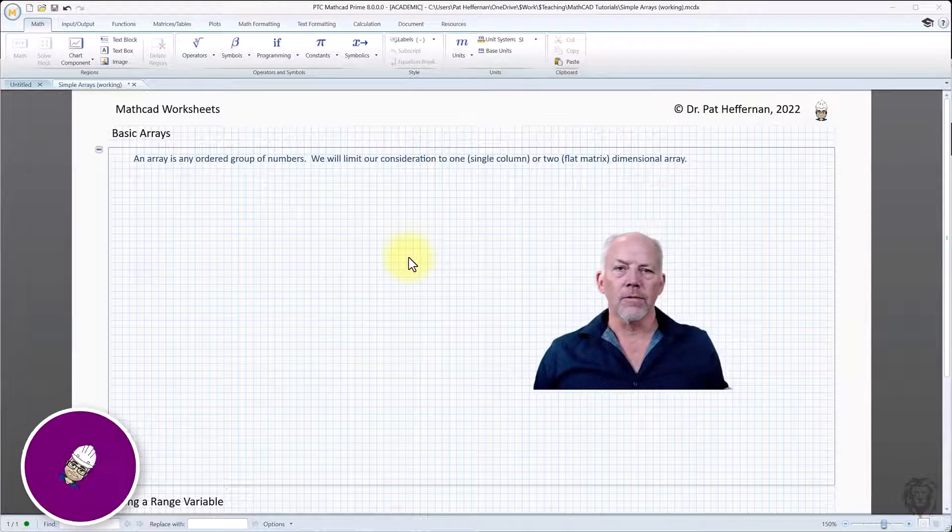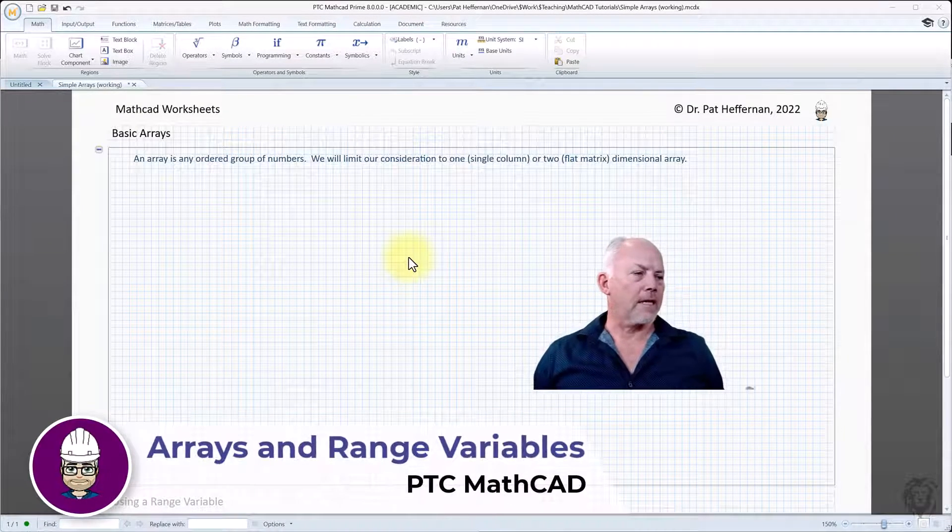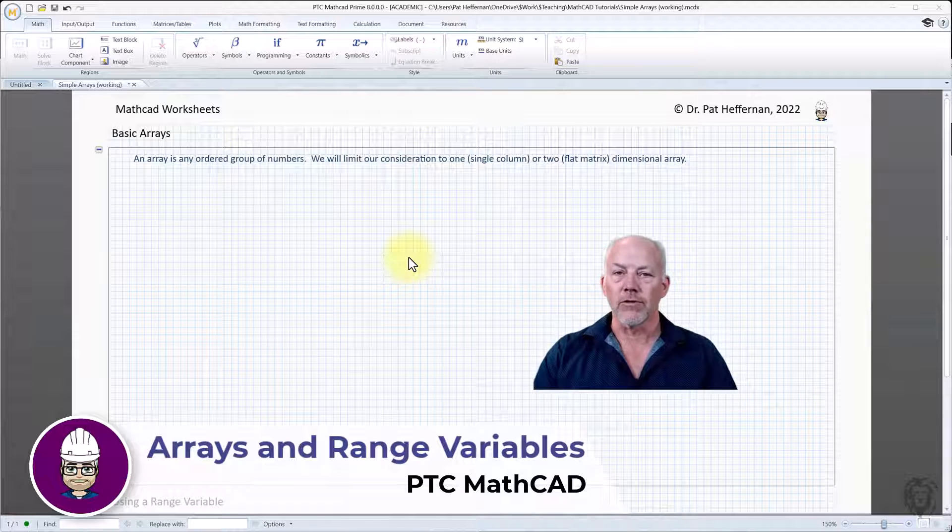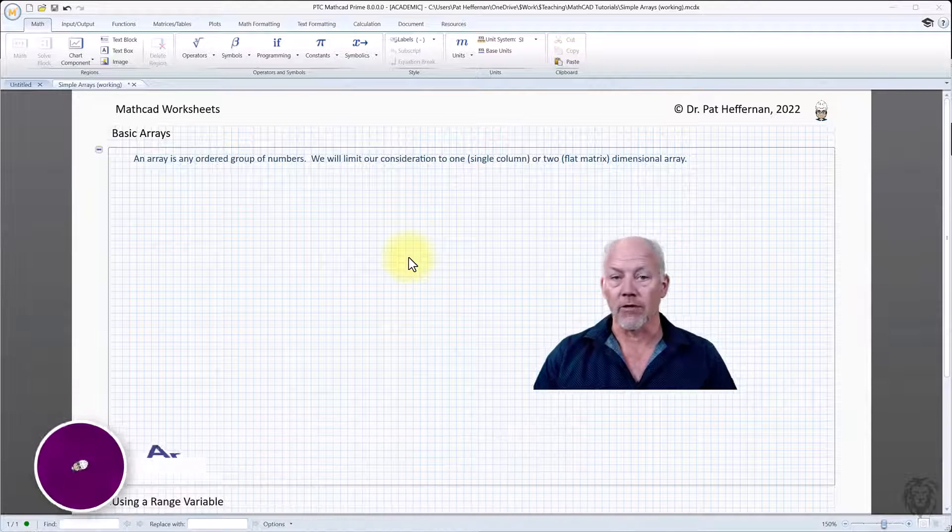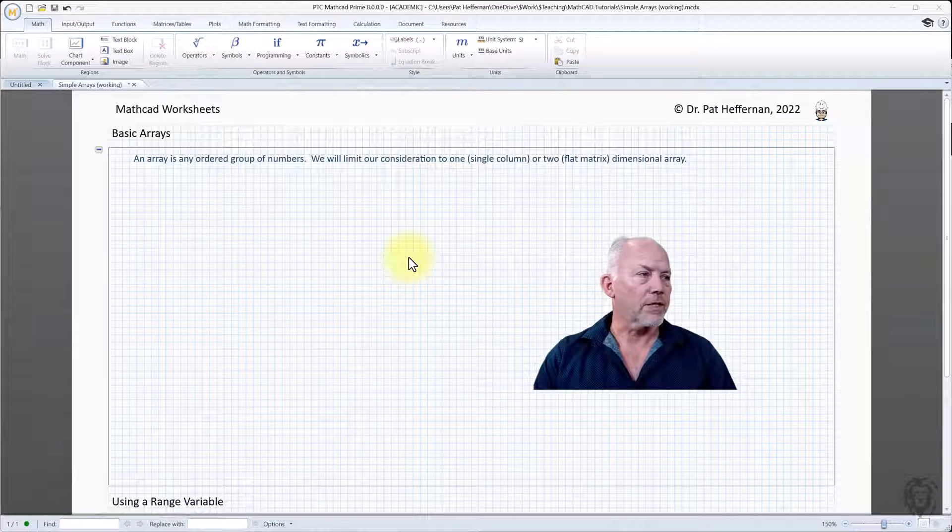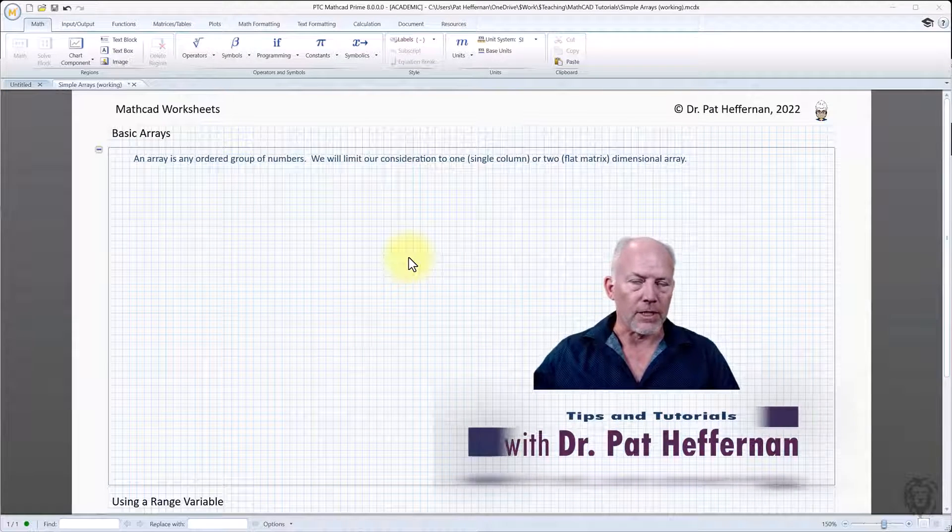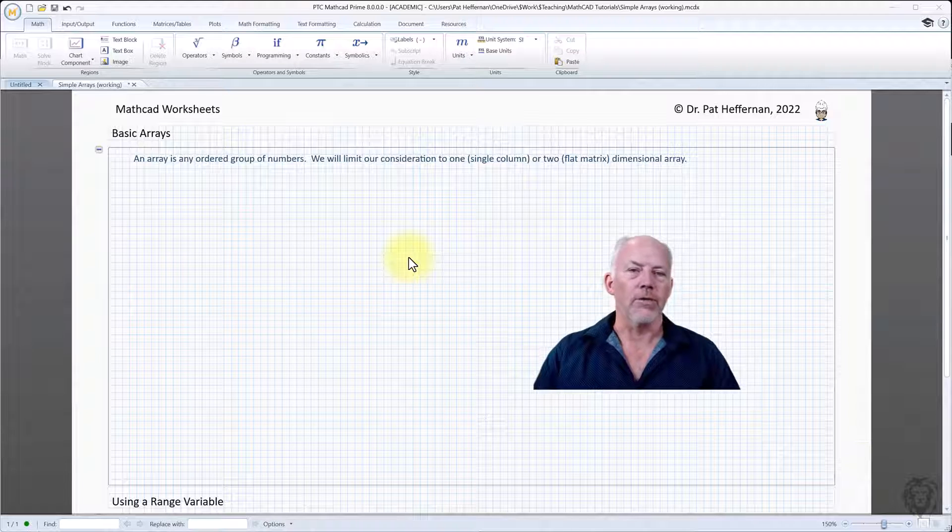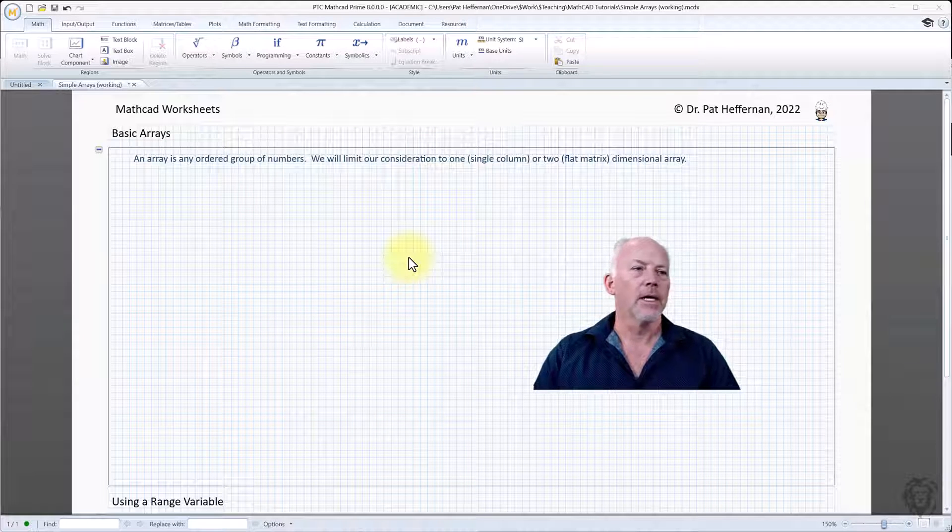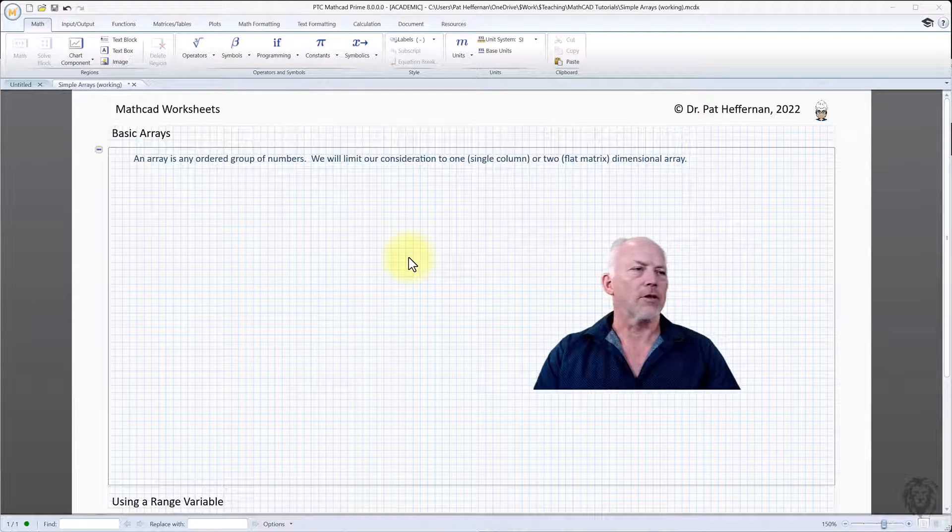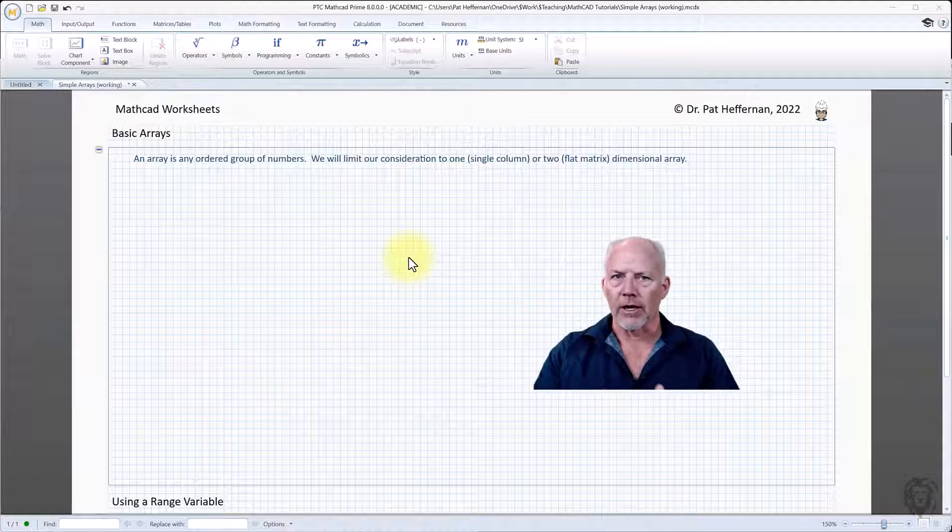Hey, welcome back. We're going to look at arrays and specifically how we can use range variables to affect sequential calculations or building an array for different uses. This is not dissimilar to some of the work that we did with matrices, but this is more generic. How do we manage matrices and how do we do so using range variables?